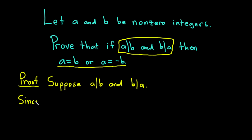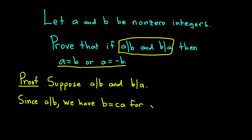Since a divides b, what does this mean? Well, this means that b is a multiple of a. So we have that b is equal to ca for some integer c. Just applying the definition carefully: a divides b means b is a multiple of a, which means b equals some integer times a — in this case we called it c.